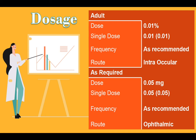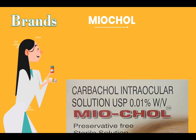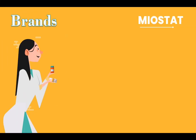Dosage — Adult Dose: 0.01%, single dose 0.01, frequency as recommended, route intraocular. Dose 0.05mg, single dose 0.05, frequency as recommended, route ophthalmic. Brands: Mycholine, Miostat.